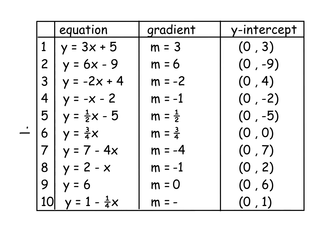I want to quickly go over question 6 — be careful with it. Question 6 has no number at the end, which means it goes through the origin (0, 0). It doesn't mean there's no y-intercept — every line has a y-intercept. If there's no number, it goes through (0, 0). For question 9, there's no x value, which just means 0x — so the gradient is 0. What you've got is a horizontal line that goes through the number 6 on the y-axis.